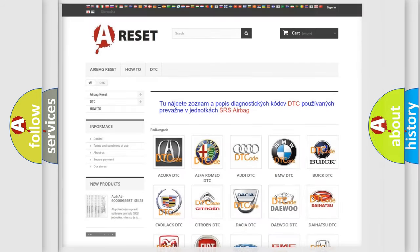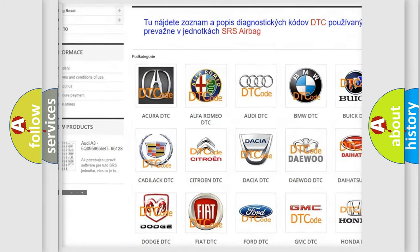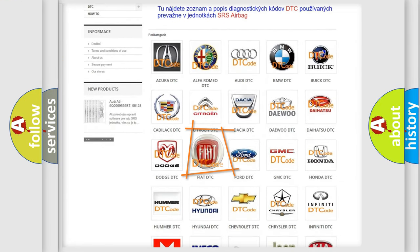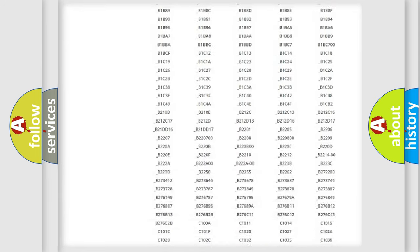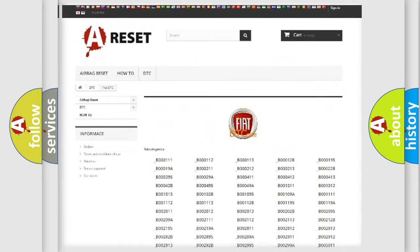Our website airbagreset.sk produces useful videos for you. You do not have to go through the OBD2 protocol anymore to know how to troubleshoot any car breakdown. You will find all the diagnostic codes that can be diagnosed in Fiat vehicles.